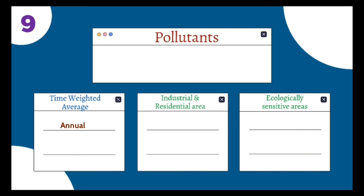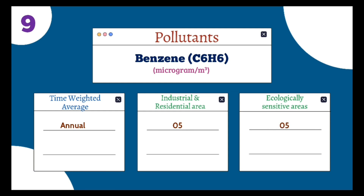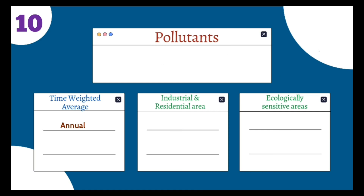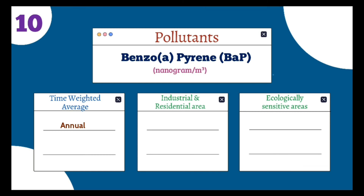The ninth pollutant is benzene (C₆H₆), and its unit is micrograms per meter cube. The annual value in both industrial/residential and ecologically sensitive areas should not exceed 5 µg/m³. The tenth pollutant is benzo(a)pyrene, and its unit is nanograms per meter cube. In both industrial and ecologically sensitive areas, the annual value should not exceed 1 ng/m³.